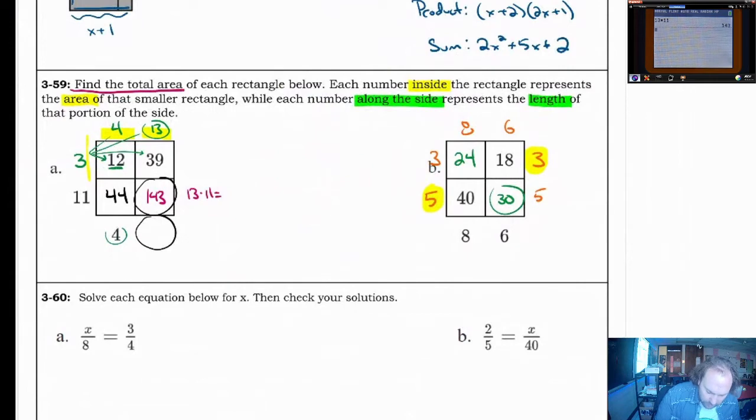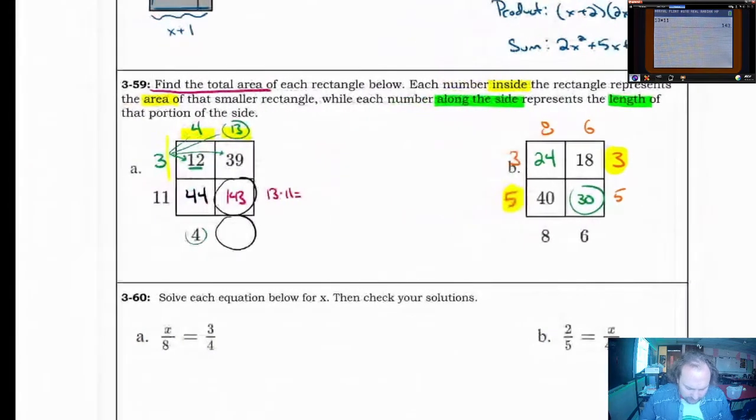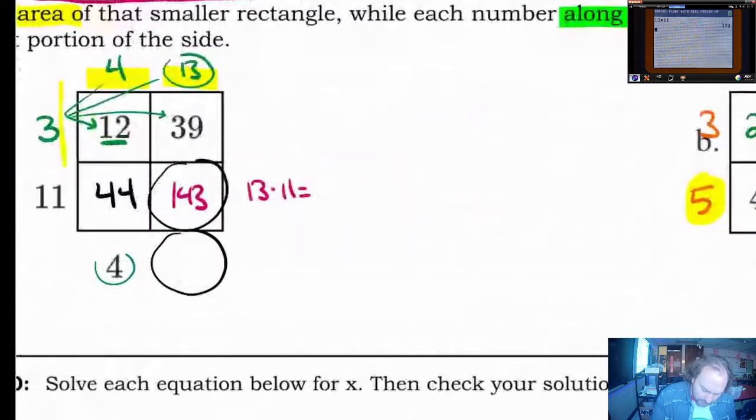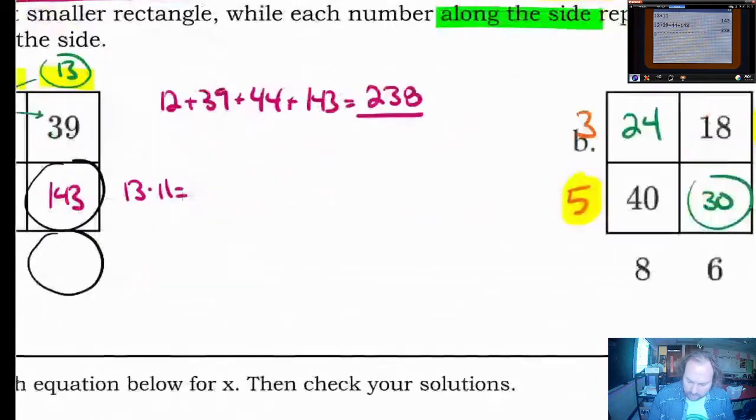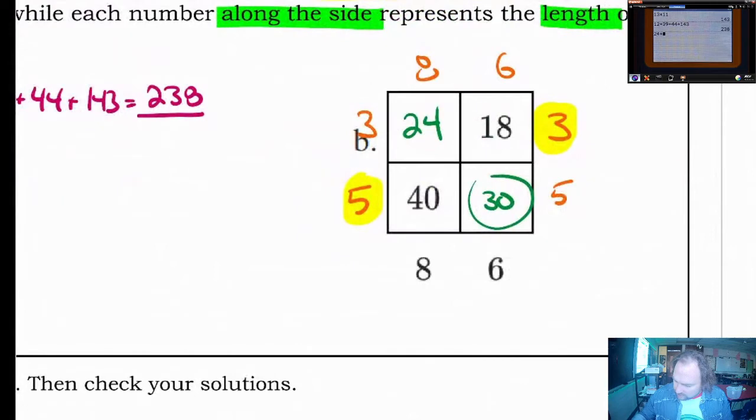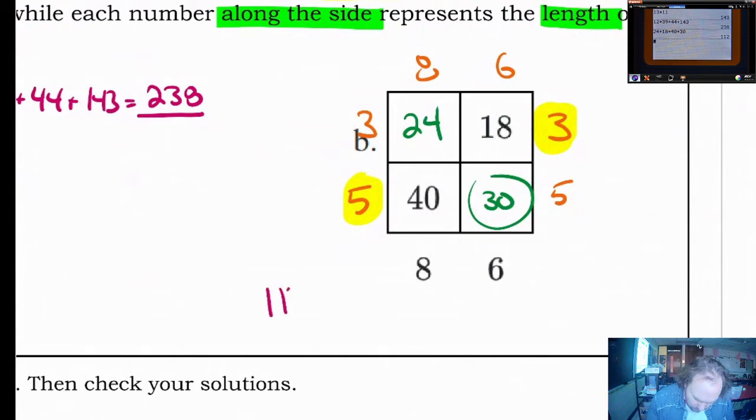I kind of misread the challenge of this problem. Our challenge is to find the total area of each rectangle below. So now that we know these numbers, we've got to add them all together. 12 plus 39 plus 44 plus 143 is going to equal 238. Over here, 24 plus 18 plus 40 plus 30. Again, I'm just doing that in my calculator. A total is going to be 112 for the total.